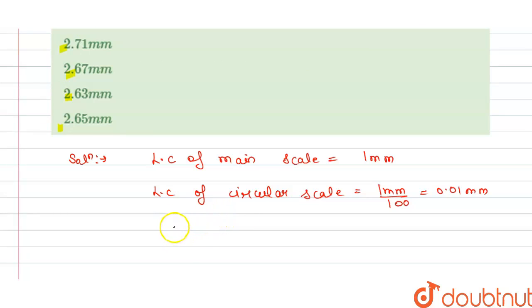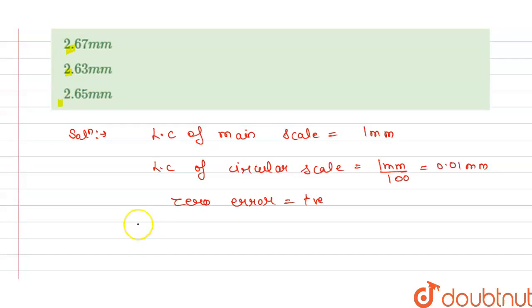So we can say that zero error is positive. And we have the zero error equals to—so we can write here if we find the zero error, this is n, that is division, and least count of circular scale.